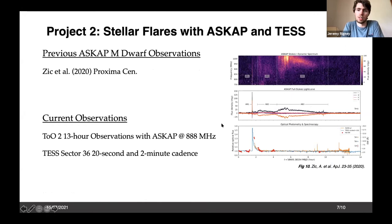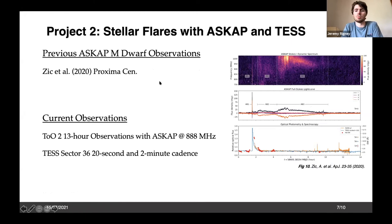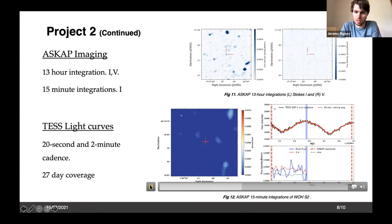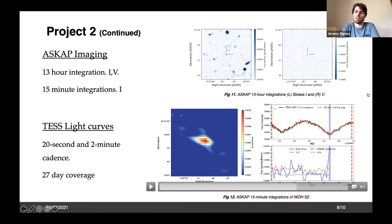My second project is stellar flares using ASKAP and TESS. Previous research detected a Type 4 radio burst from Proxima Centauri using ASKAP coincident with optical flares. Our current observations are two 13-hour targeted observations with ASKAP and TESS, looking at a large field of view for multiple M-dwarfs. We have very recent preliminary results showing radio emission detected from an M-dwarf candidate in this field, with no comparative optical data in TESS — something we're investigating further.